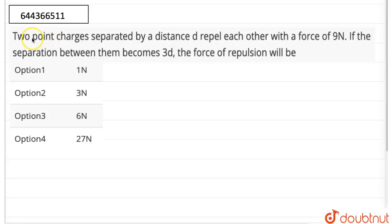Hello, so the question here is two point charges separated by a distance d repel each other with a force of 9 Newton. The separation between them becomes 3d. The force of repulsion will be 1 Newton, 3 Newton, 6 Newton or 27 Newton.